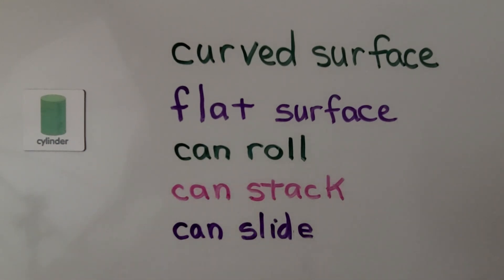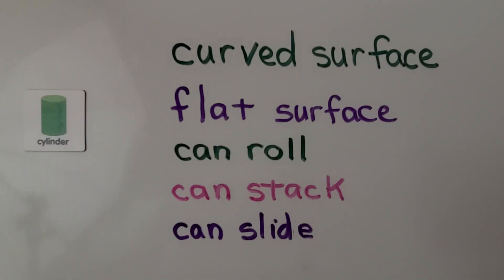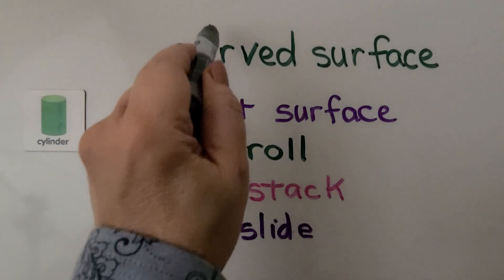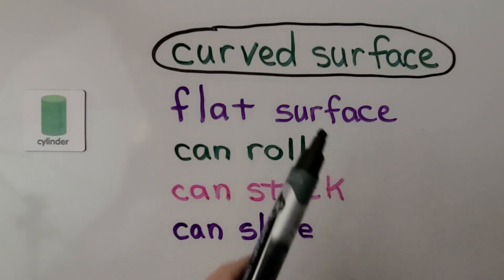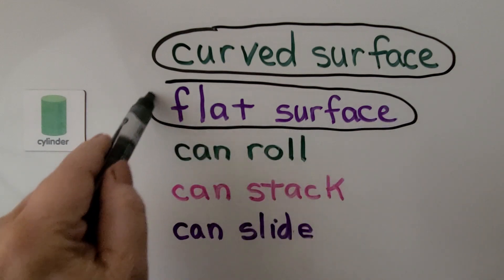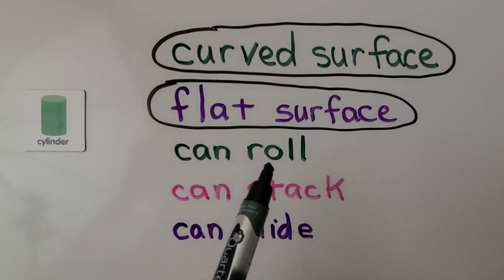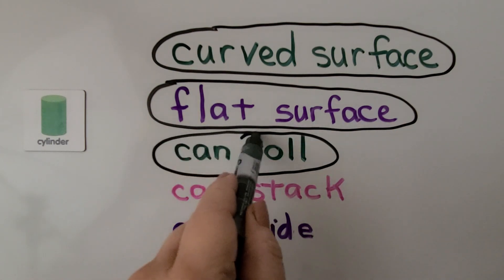Here is a cylinder. We need to circle the words that describe a cylinder. This says curved surface — does a cylinder have a curved surface? If you said yes, you're correct. We circle this because a cylinder does have a curved surface. This says flat surface — does a cylinder have a flat surface? If you said yes, you're correct. It has two flat surfaces, so we can circle this. This says can roll — can a cylinder roll? If you said yes, you're correct. It can roll on its curved surface, so we can circle can roll.